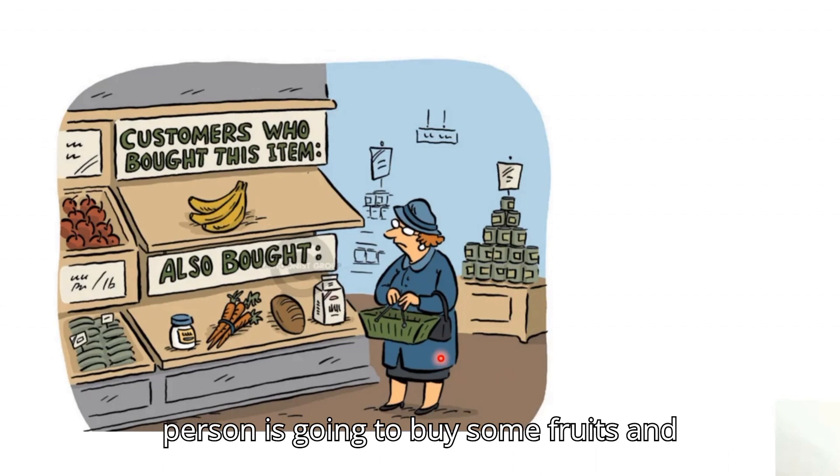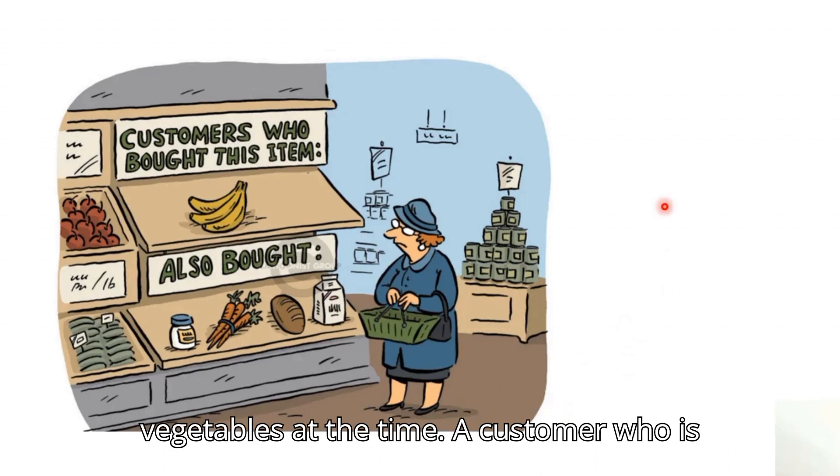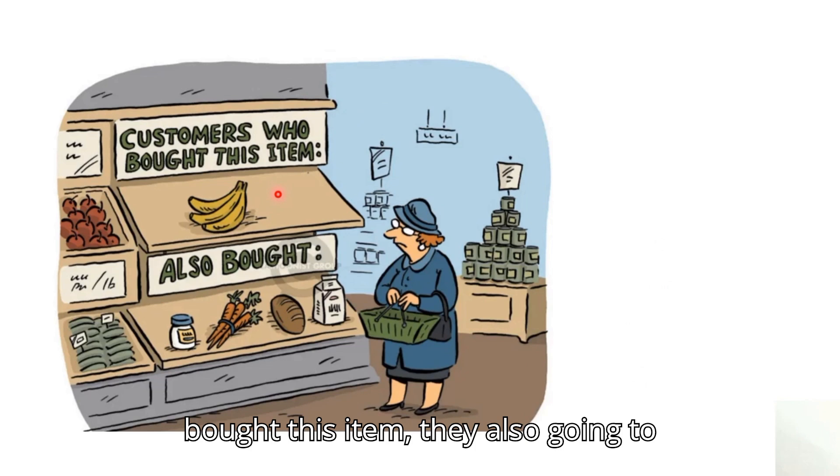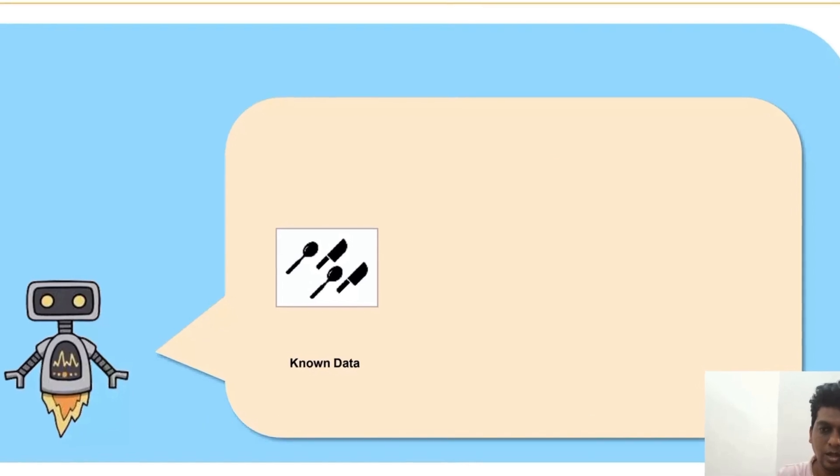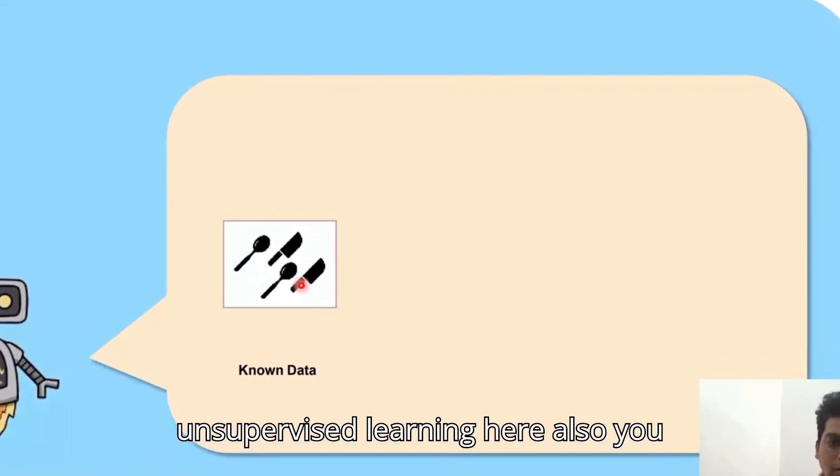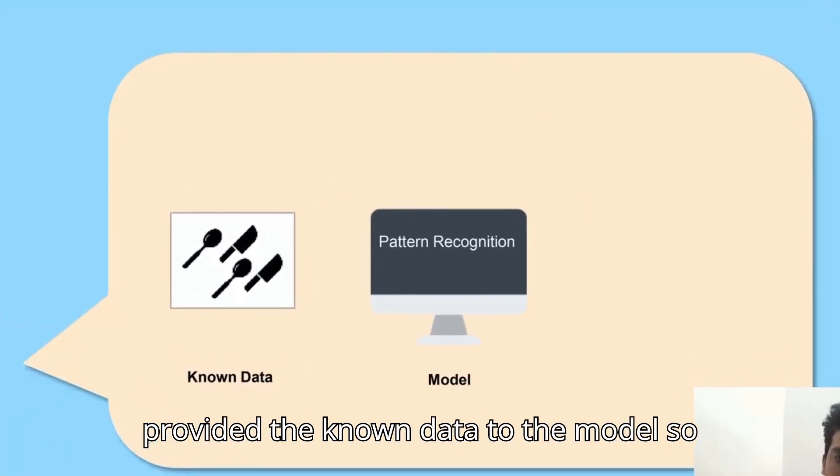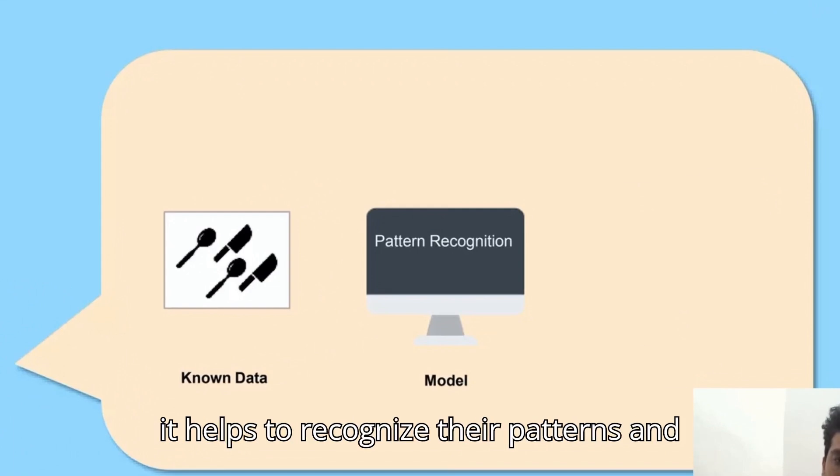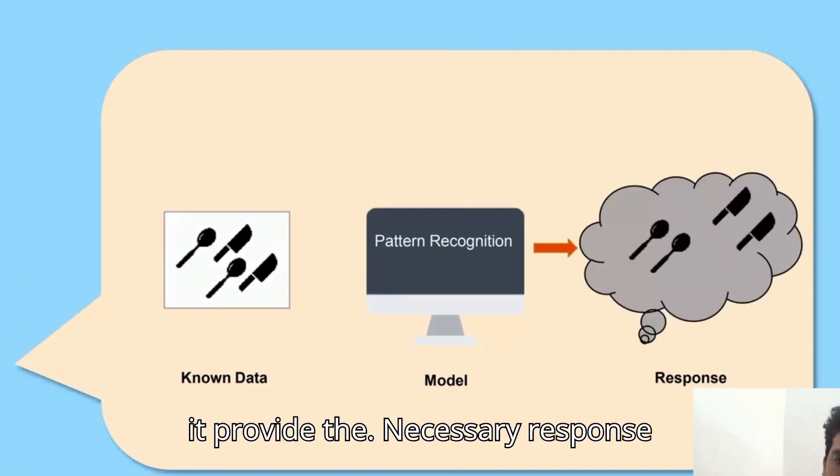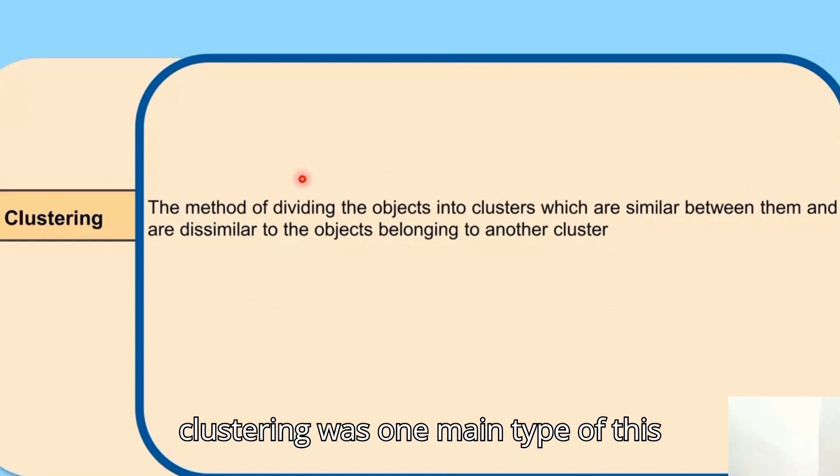A person is going to buy some fruits and vegetables. At the same time, a customer who bought this item is also going to buy the same. Based on clustering-based classification, a person who is buying bananas buys these things also. In unsupervised learning, we provide known data to the model so it helps recognize patterns and provides the necessary response.